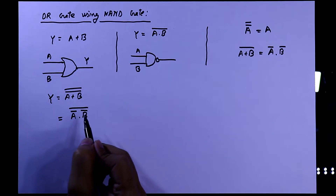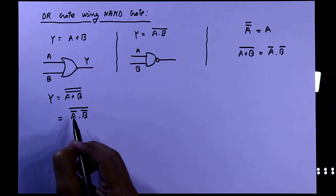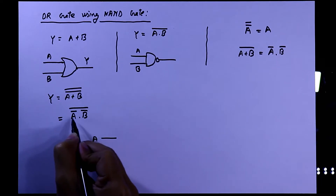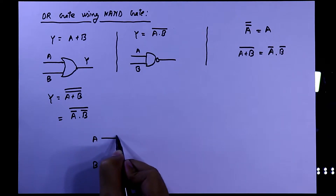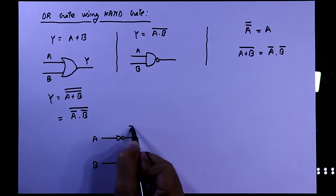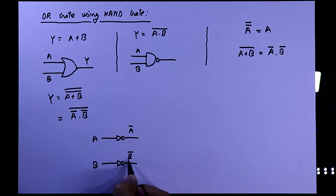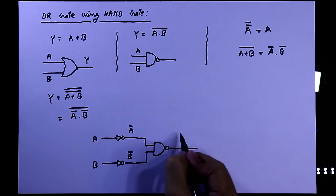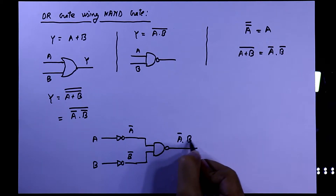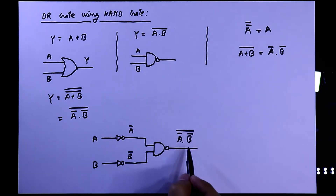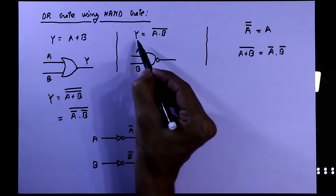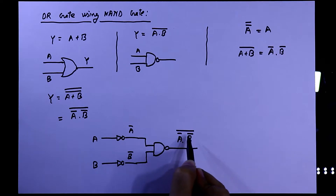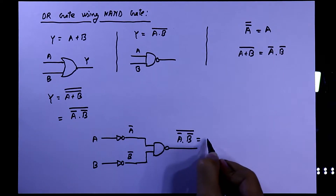So with this result we can make an OR gate using NAND gate. We have two inputs a and b. If we use ā and b̄ as inputs to a NAND gate, the output will be (ā·b̄)̄, which equals a + b.